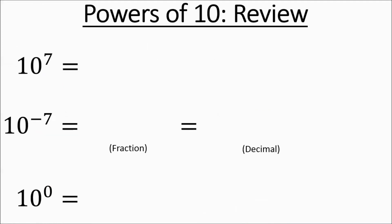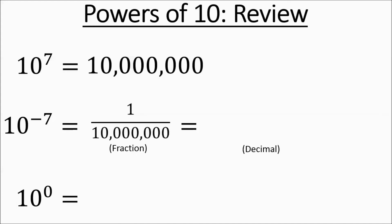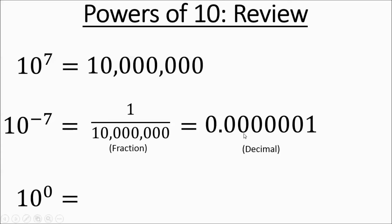To review: 10 to the power of 7 is going to be 1 with 7 zeros. 10 to the negative 7 is going to be 1 over that — so 1 over 1 with 7 zeros. As a decimal, you're going to have a total of 7 zeros with the decimal after the first zero — a total of 7 zeros. And finally, anything to the zero power works out to 1.